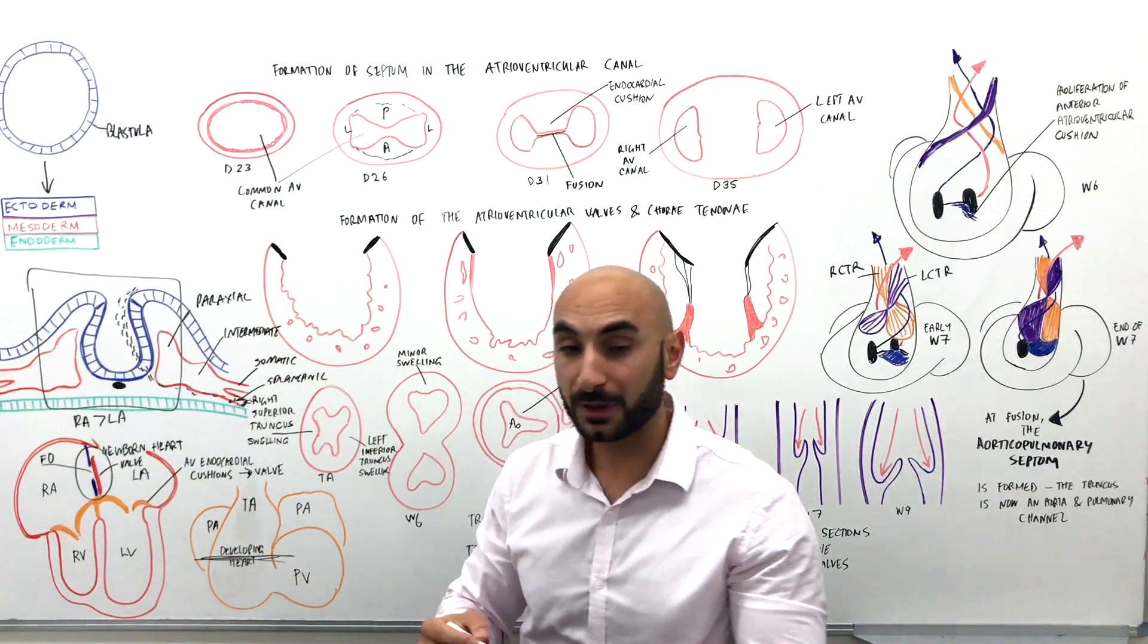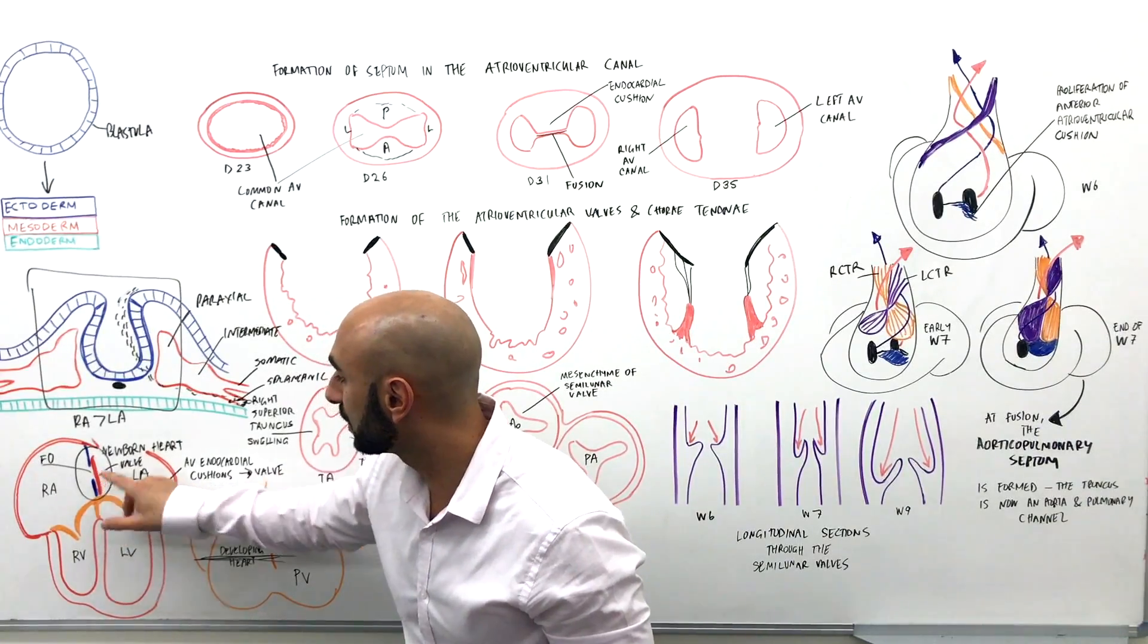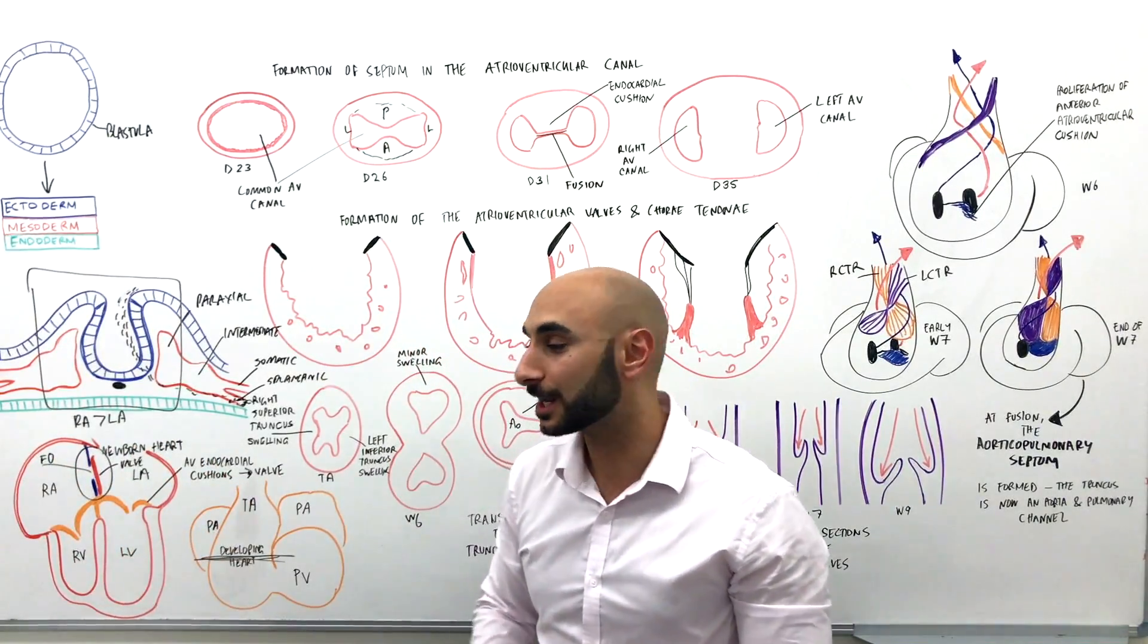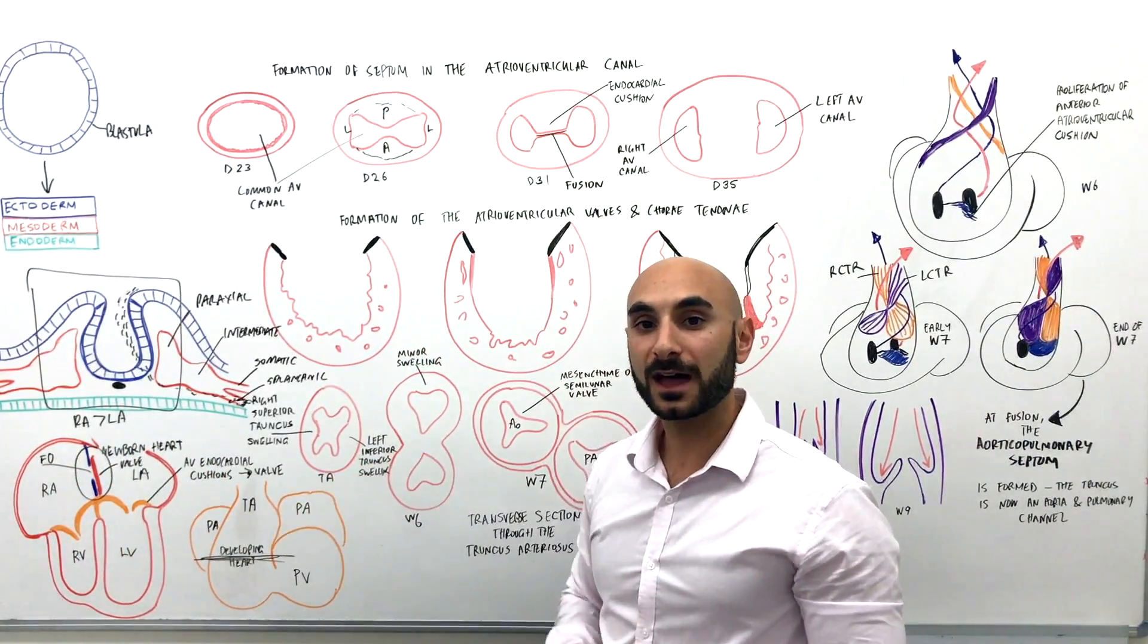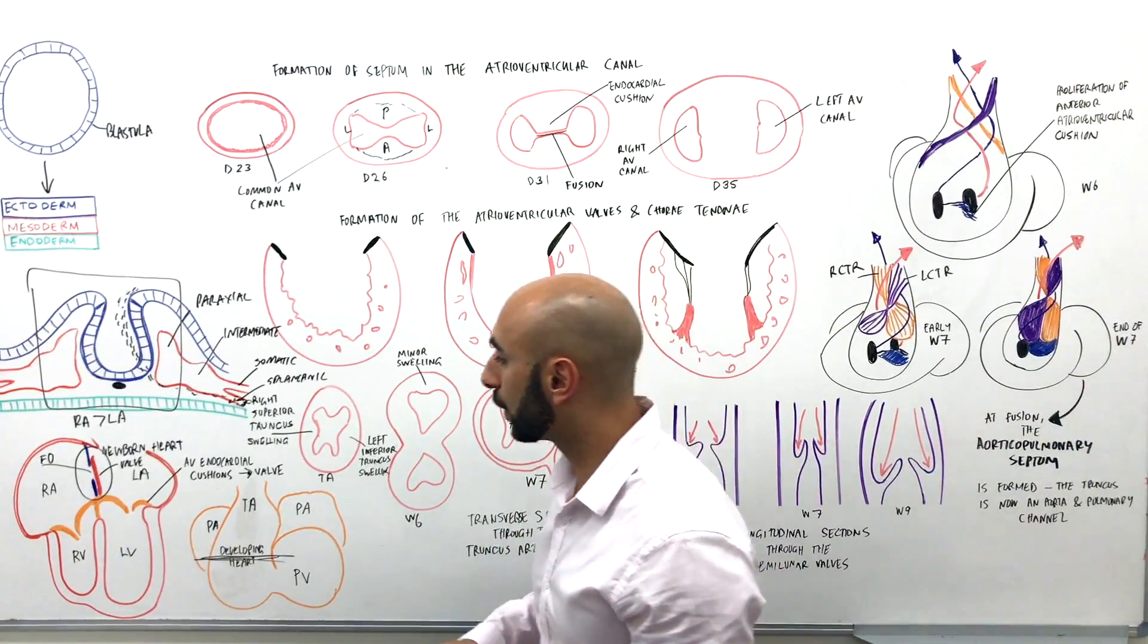Whereas before birth the right atria had a higher pressure than the left atria, but after birth it swaps, and so what happens is that this valve fuses because of the pressure change. So I go through all of that in that previous video.